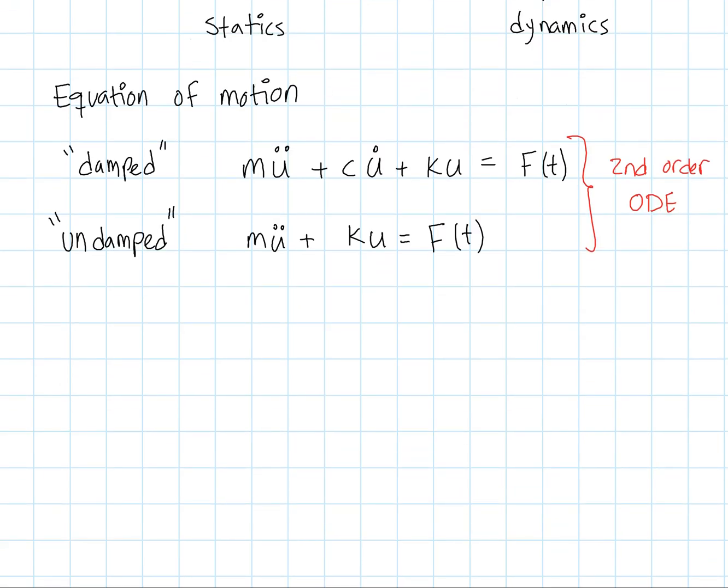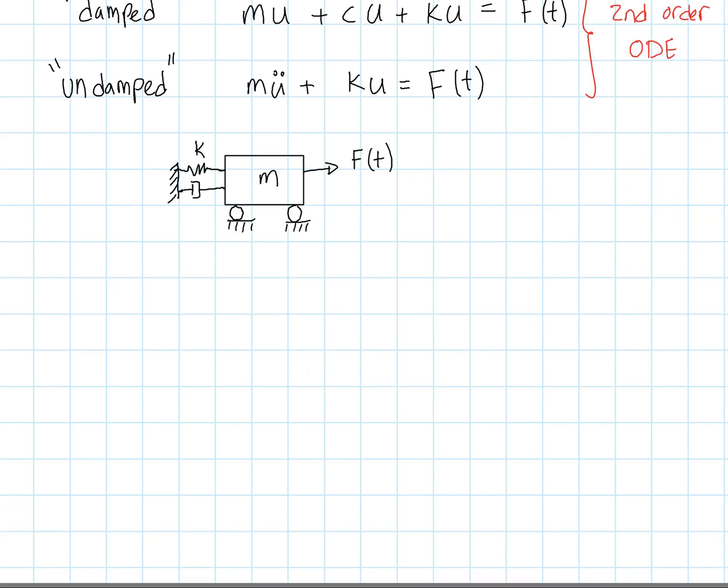What we can also do is to ignore the damping parameter and write MU dot dot plus KU is equal to force. And we call this the undamped case because there's no damping parameter in there. And so again, these are second order differential equations, ODE standing for Ordinary Differential Equations. We tend to draw our ODEs in the following way. We tend to label our masses as carts sitting on wheels attached to spring elements with values K. We have a dashpot element responsible for damping or damping and things like friction. And we're pulling on this mass with a force T.